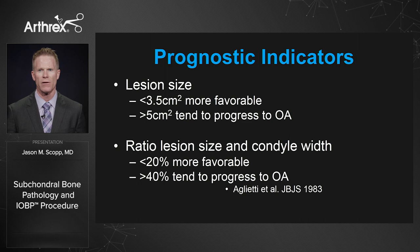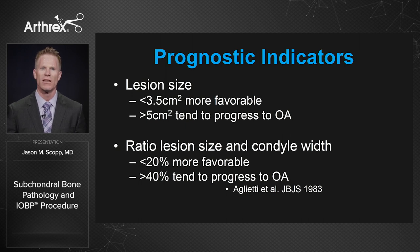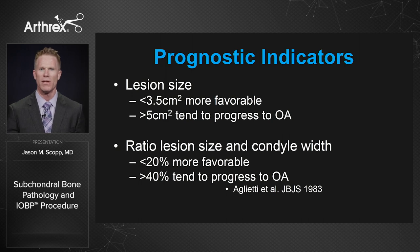What are the prognostic indicators? When looking at that MRI in your office, what will make something likely to heal versus progress to degenerative changes? First, lesion size: lesions less than 3.5 cm² tend to be more favorable, while lesions greater than 5 cm² progress to osteoarthritis. Also consider the ratio of lesion size to condyle width, since size is not absolute — a lesion in a small condyle is different than in a large one. Less than 20% condyle width is favorable; greater than 40% tends to progress to osteoarthritis.